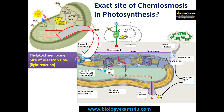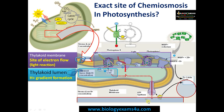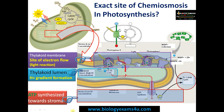As the electron flows, the energy released is used to pump protons from the stromal side to the thylakoid lumen or thylakoid space. This is the site where the proton gradient is created — proton gradient formation occurs in the thylakoid lumen. Once the proton gradient is formed, protons move through ATP synthase, which is oriented toward the stromal side where ATP is synthesized.